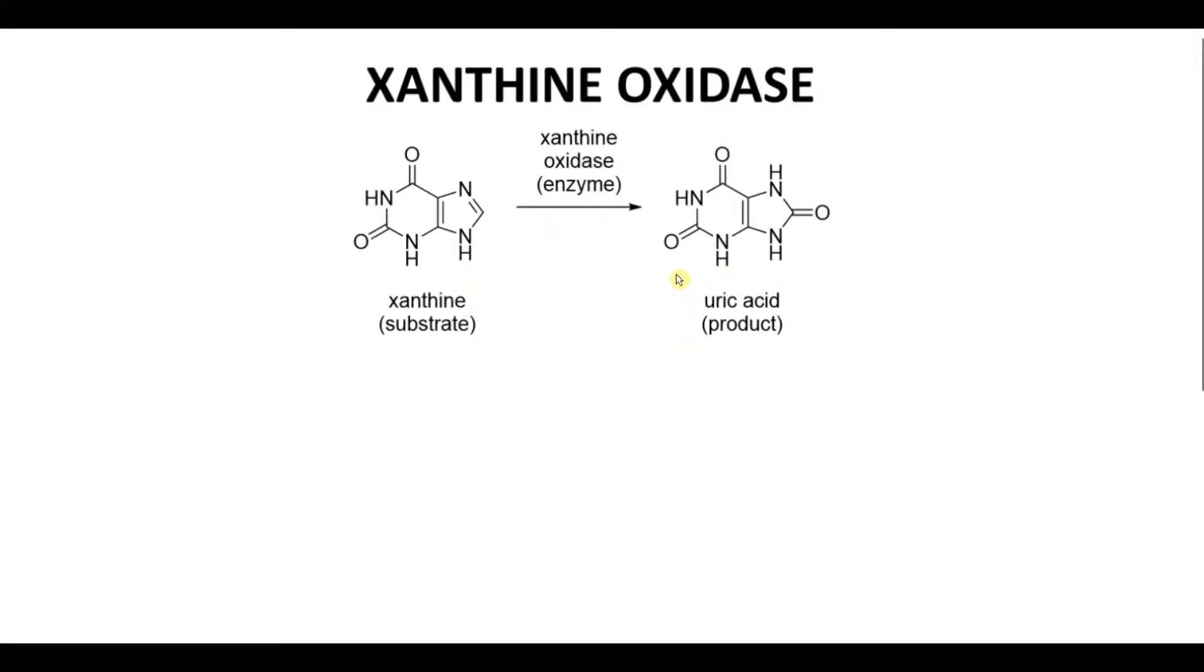To design an inhibitor for xanthine oxidase, we'd want a molecule that looks quite a bit like xanthine, so it'll bind to the active site. However, we don't want it to be too similar to xanthine because we don't want the inhibitor to undergo the reaction, so it has to be similar yet different.